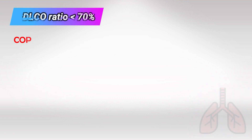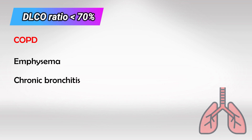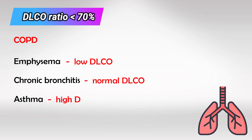If the FEV1/FVC ratio is less than 70%, the diagnosis has to be COPD, and we have three options: emphysema, chronic bronchitis, or asthma. They will also mention either low DLCO, normal DLCO, or high DLCO. If it is less than 70% with low DLCO, this is emphysema. If it is normal DLCO, this is chronic bronchitis. And if it is high DLCO, this is asthma.